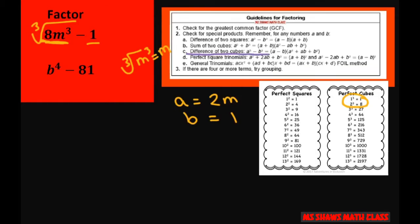So I'm going to write this as a cubed minus b cubed. So this is 2m, and our b is 1. Of course, if you cube this out you get this back. So now let's write out the formula.